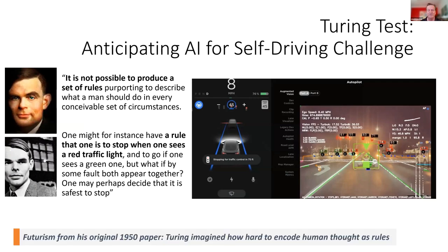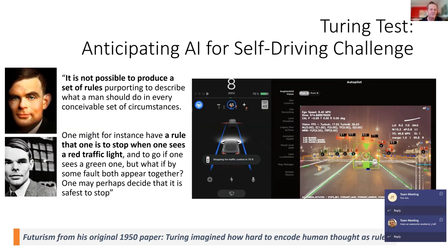Another tip of the hat to Turing: he scratched his head over encoding human knowledge as business rules. He used the example, which is now at the forefront of advanced AI: give the instructions to drive a car. One of them is to stop when one sees a red traffic light, but there are many edge cases that would present challenges. This is the modern interface that is actually part of the Tesla driving interface.